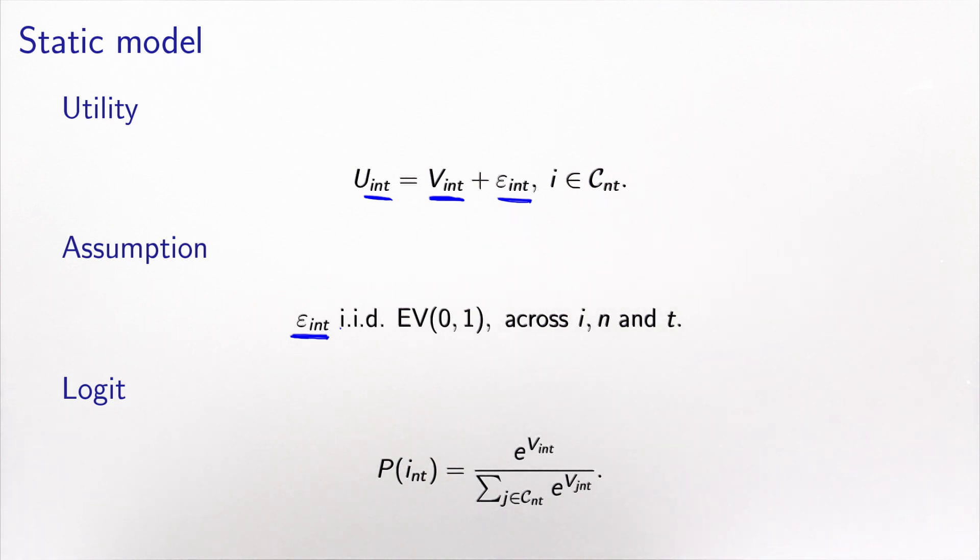A convenient assumption would be to assume that epsilon_i,n,t are extreme value distributed, and they are i.i.d. Remember, i.i.d., independent and identically distributed across all dimensions: across i, across n, but also across t, across time. If we do this assumption, the model is a logit model.